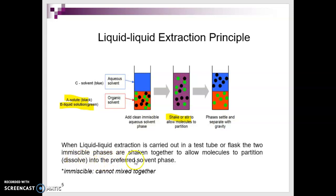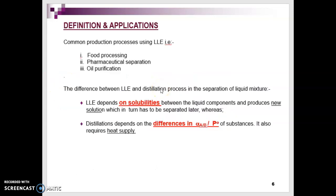When liquid-liquid extraction is carried out in a test tube, the two immiscible phases are shaken together to allow molecules to partition or dissolve into the preferred solvent phase. This is how the components are separated in liquid-liquid extraction. Of course in this process, both components must be liquids. The common production processes using liquid-liquid extraction include food processing, pharmaceutical separation, and oil purification.